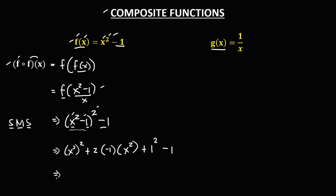To simplify: exponent raised to another exponent means multiplication, so 2 times 2 equals 4, giving us x to the power 4. Then multiply: 2 times negative 1 is negative 2, and negative 2 times x squared gives us negative 2x squared. Then 1 squared is 1, then minus 1.